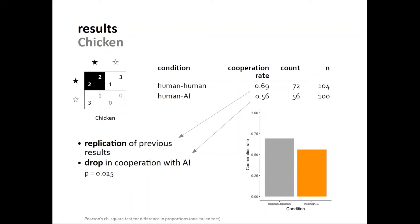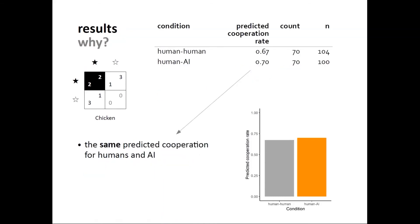To find out why people cooperate less with machines in Chicken, we looked at predictions. Notice in the Chicken game it's slightly different: you might cooperate with a machine less if you expect the machine to be more cooperative than a human, because if you expect your partner not to cooperate in Chicken, you should actually cooperate to avoid collision. To secure a positive payoff, you are better off cooperating.